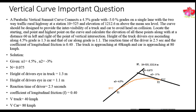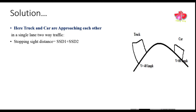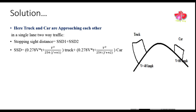The truck and car are approaching each other on a single lane two-way traffic road, so we need the total stopping sight distance, which is the sum of the stopping sight distance of the truck and the car. The formula for stopping sight distance for the truck is: SSD = 0.278·V·T + V² / (254·(F + N1)), using the plus sign since it is an ascending gradient.